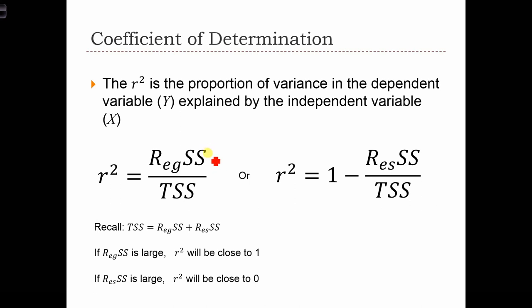The regression sum of squares, this is the explained part, divided by the total sum of squares. Another way to think about this, or we can rearrange the terms, and see that r-squared is also equal to 1 minus the residual sum of squares over the total sum of squares.